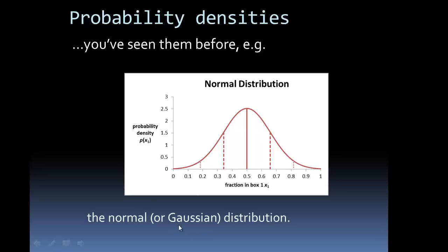Physics people actually quite often call it a Gaussian distribution after the famous physicist and mathematician Gauss who actually did a lot of work with them.